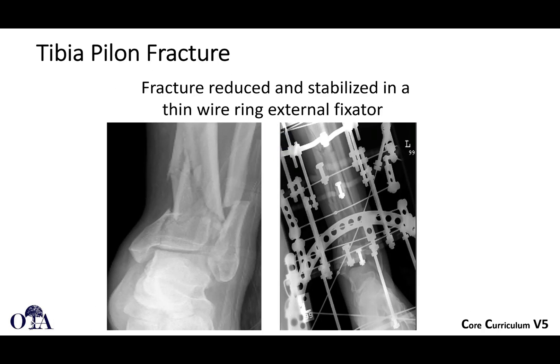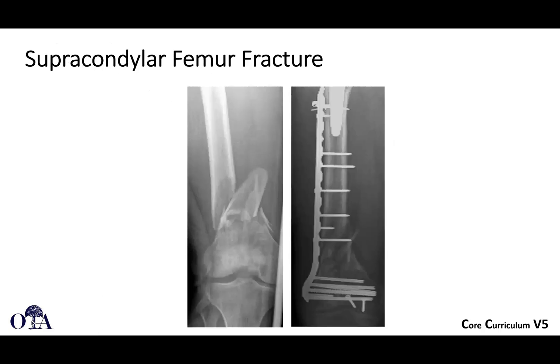Here's a tibia pilon fracture involving the joint surface and the distal tibia. That fracture has been reduced and stabilized with a thin wire ring external fixator that we talked about in the last video. This makes the x-rays very difficult to see, as so much metal is blocking your x-rays.